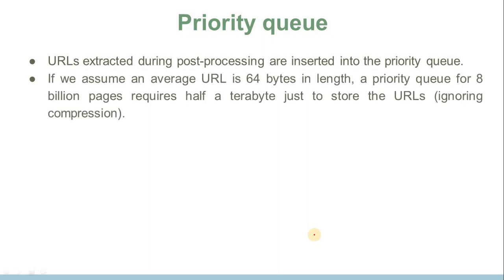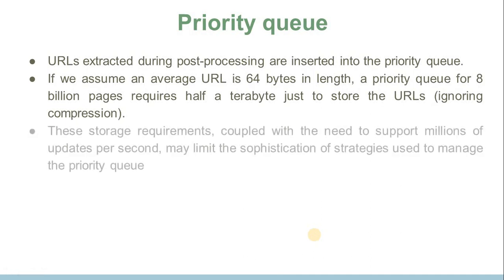The last component is the priority queue. URLs extracted during post processing are inserted into the priority queue. If we assume an average URL is 64 bytes in length, a priority queue for 8 billion pages requires half a terabyte just to store the URLs. This storage requirement, coupled with the need to support millions of updates per second, may limit the sophistication of strategies used to manage the priority queue. That's all about web crawling.